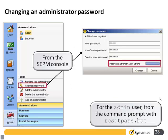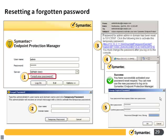Once we've set up administrators, we can change their passwords — this is a good security feature, especially for the admin password created on installation. You can also use the ResetPass.bat if you forget or lose the password. Running ResetPass.bat prompts the administrator to enter their email address and it will email back the new password.